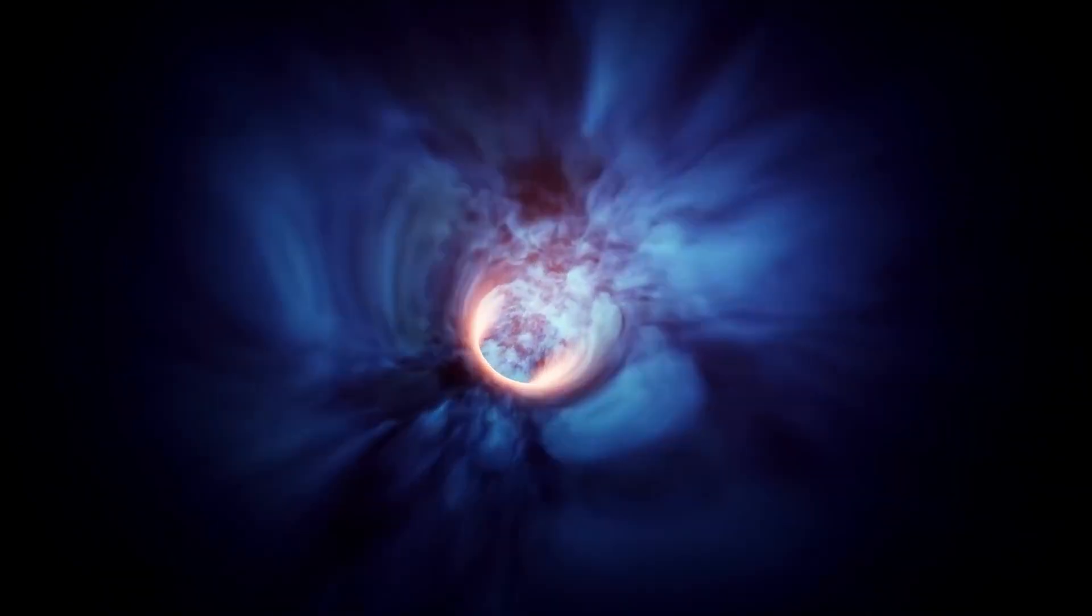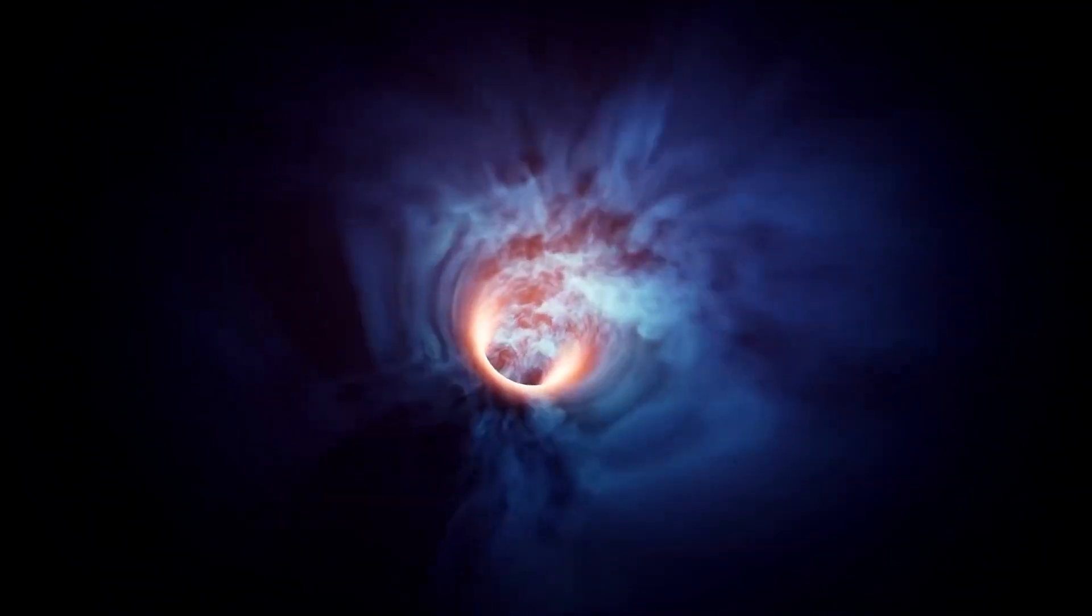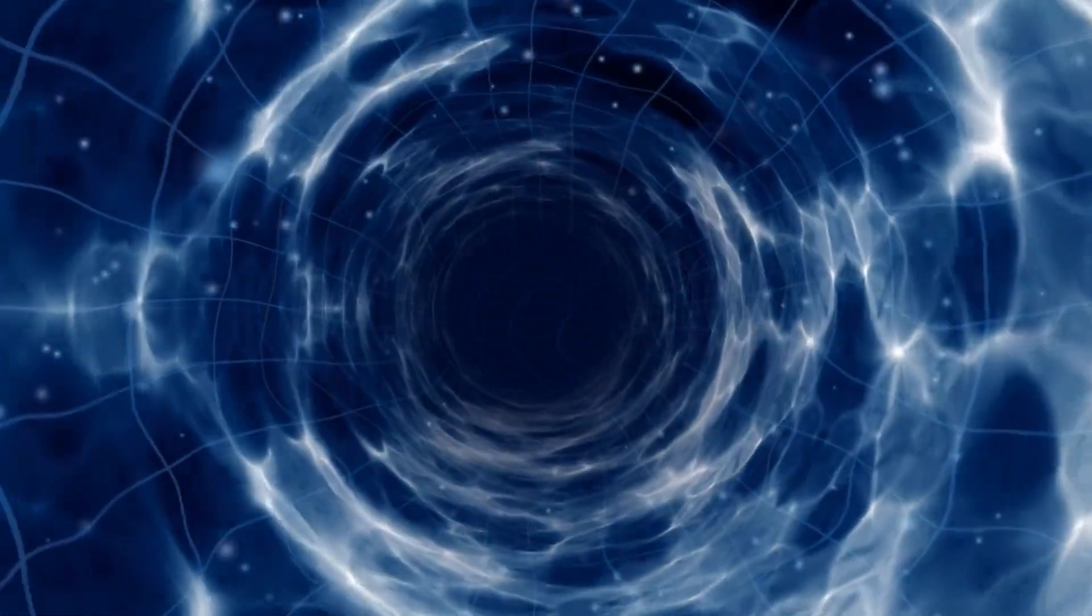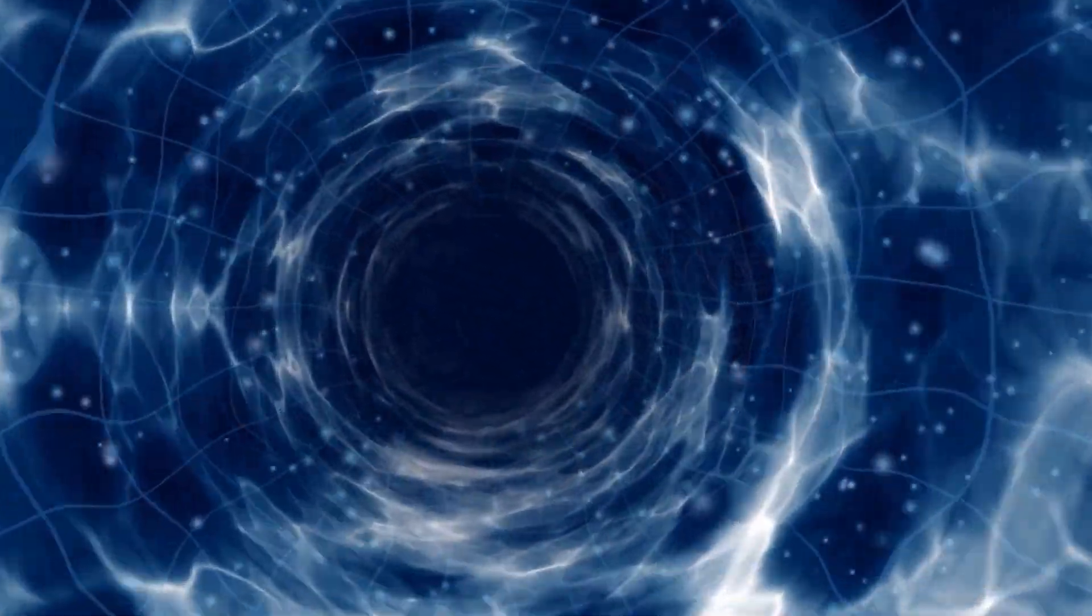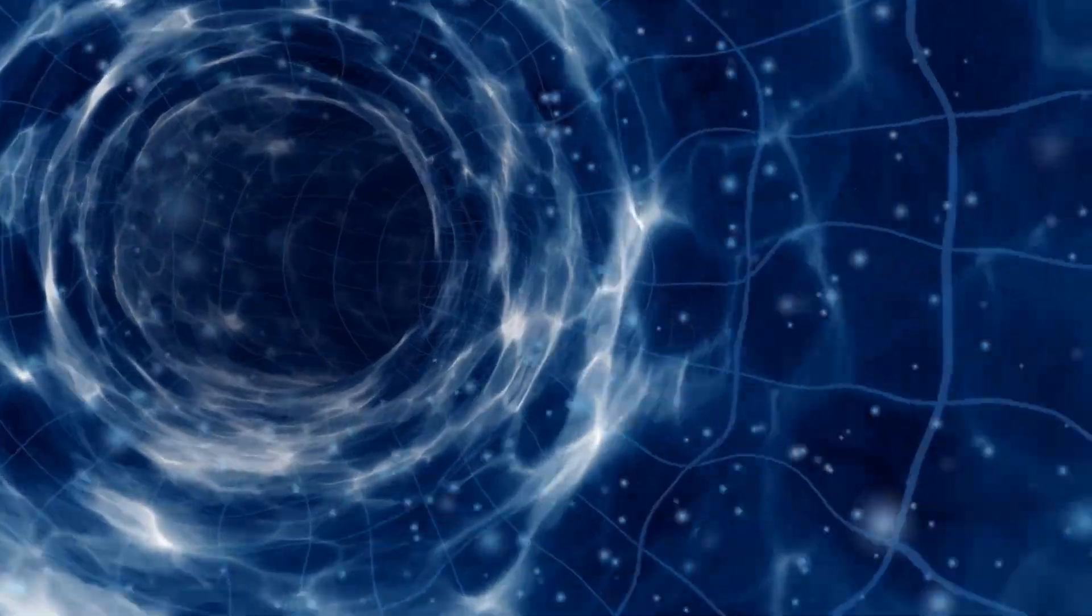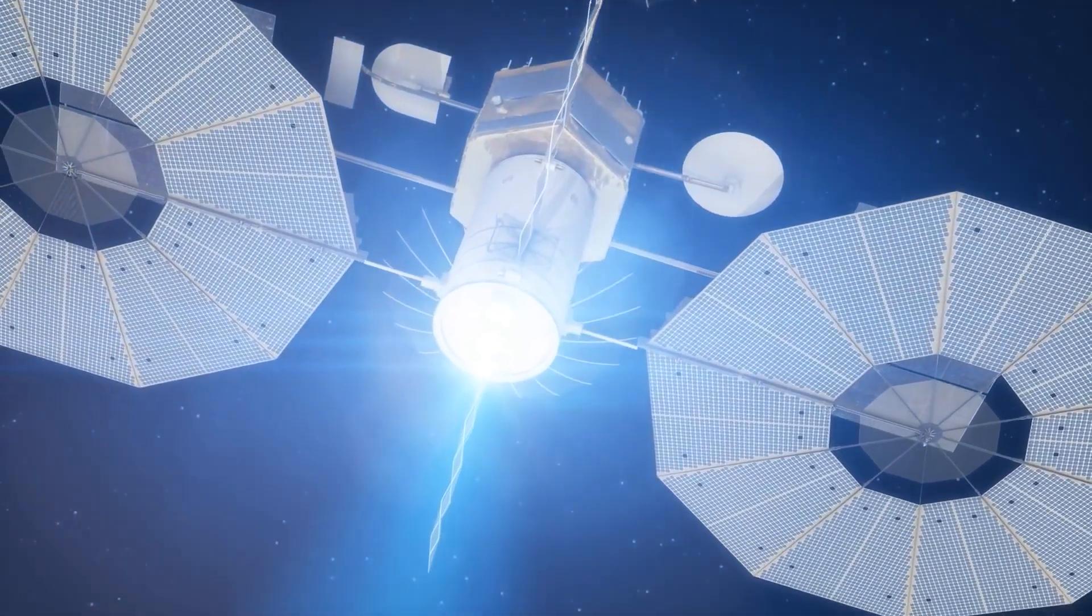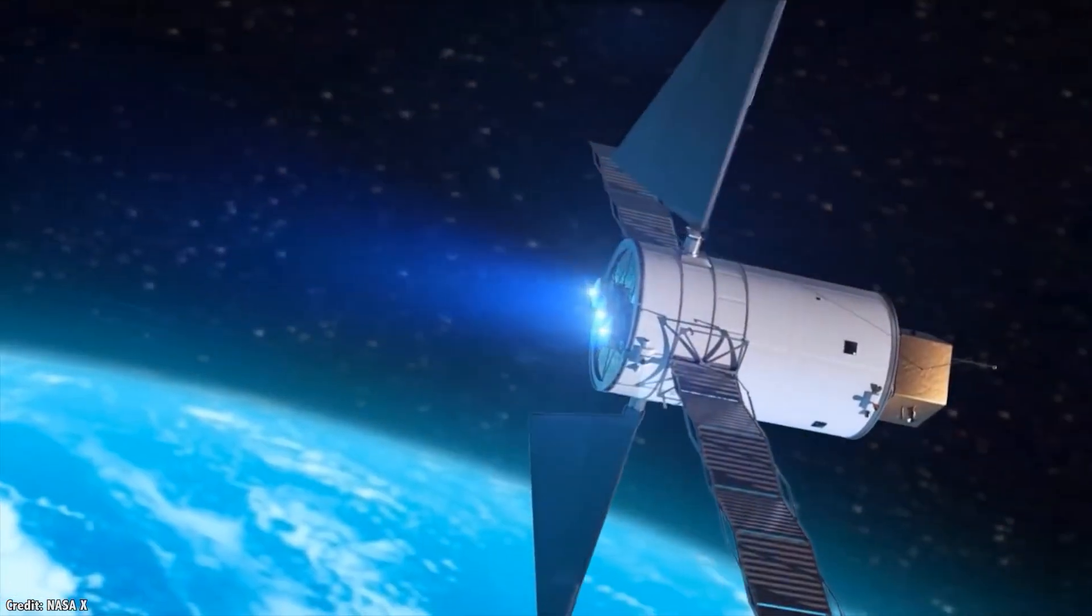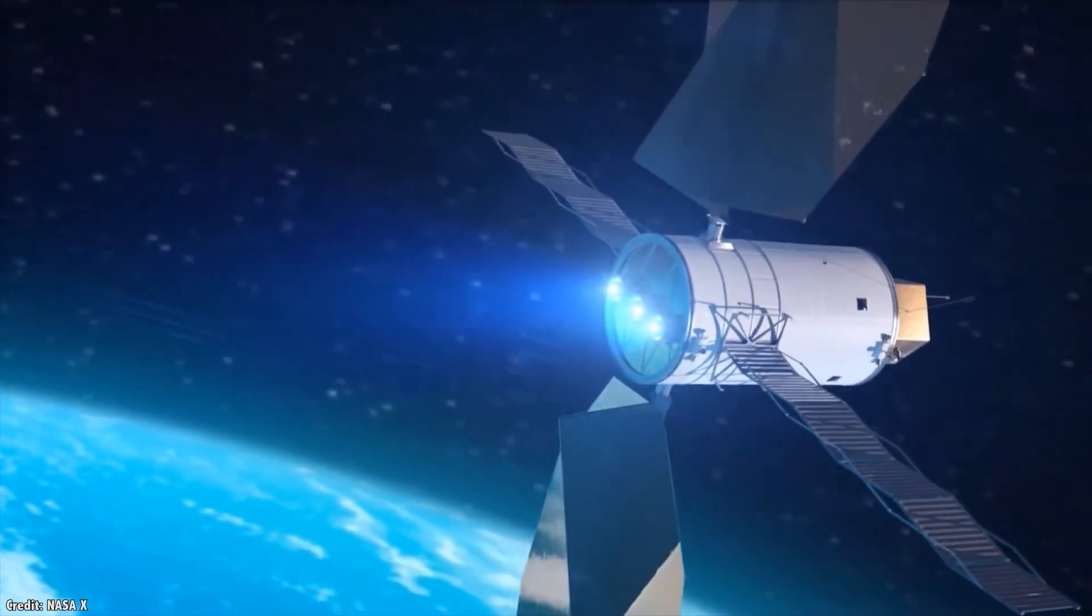Hypothetically, the operation of a time travel machine utilizing a traversable wormhole would involve accelerating one end of the wormhole to a substantial fraction of the speed of light, potentially facilitated by an advanced propulsion system. Subsequently, it would be brought back to its initial point of origin.